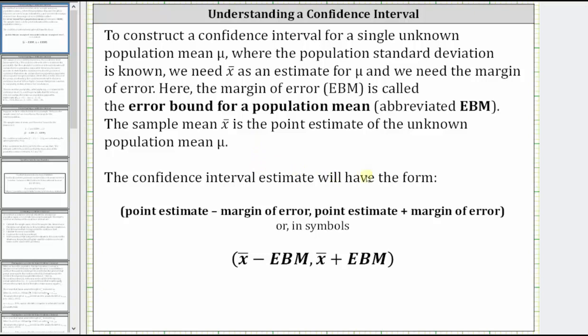The confidence interval will have the form: point estimate minus margin of error to point estimate plus margin of error. Or, using symbols, (x̄ - EBM, x̄ + EBM).